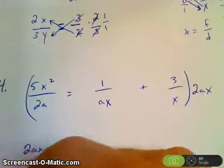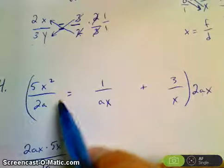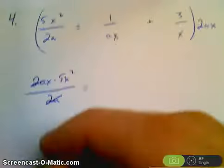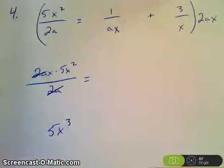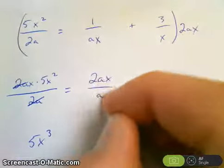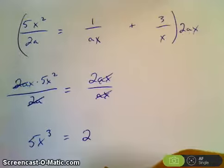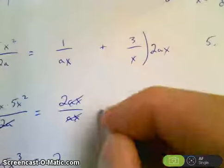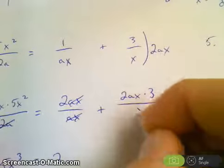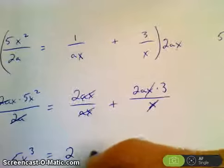Or if you need help seeing that, I'll just do it like this. 2ax times 5x squared all divided by 2a is what happens when I distribute that to this over here. So in that case, 2a cancels with 2a, so I have x times 5x squared, which is equal to 5x cubed. Distribute. I get 2ax divided by ax. That reduces to 2. That's what I said. Reduces to 2. Plus this times this. So I'm just going to leave it as 2ax times 3 all divided by x. The x is reduced. And I get 2a times 3, which is 6a.